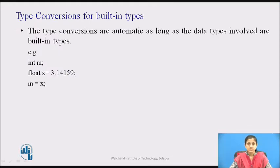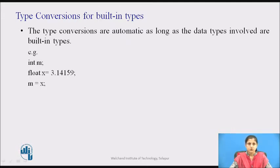When constants and variables of different types are mixed in an expression, C++ applies automatic type conversion to the operands as per certain rules. Similarly, an assignment operation also causes automatic type conversion. The type of data to the right of an assignment operator is automatically converted to the type of the variable on the left.